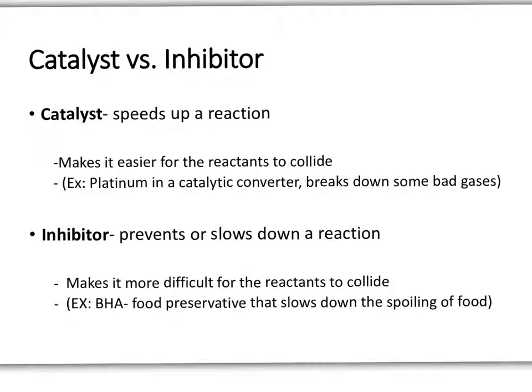But the opposite of that is something called an inhibitor. An inhibitor is what's going to slow down or prevent a reaction from even happening. It makes it more difficult for the reactants in a reaction to actually collide with enough energy to create that reaction. Something that's very important to us are food preservatives like BHA. Food preservatives are actually going to slow down the spoiling of food. How? Why? Well, bacteria grows on the food and then wants to have a chemical reaction that's going to break down and ripen the food. By having that food preservative in there, it's inhibiting or slowing down that reaction in order for the food to last longer.